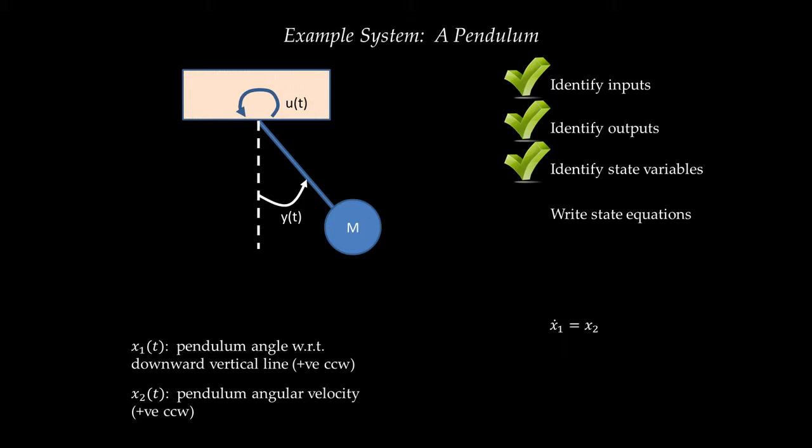This law of motion applies only in two cases. The summation of moments on a rigid body around its center of gravity equals the moment of inertia around the center of gravity multiplied by angular acceleration. It is also true that the summation of moments around a fixed point in space that the rigid body is hinged at equals the moment of inertia around that point multiplied by angular acceleration. In this case, we do have a pendulum hinged at a fixed point, so we can apply this law.